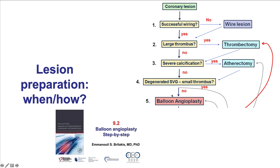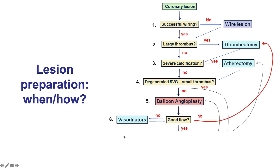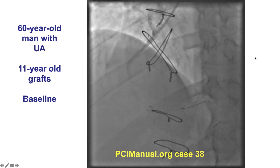If neither scenario applies, then in most cases it is best to perform balloon angioplasty, which will be discussed in detail in video 9.2. After balloon angioplasty, the flow of the vessel should be assessed. If there is good flow, one can proceed with stenting. However, if there is poor flow or no-reflow, it is important to give vasodilators and also sometimes perform thrombectomy.